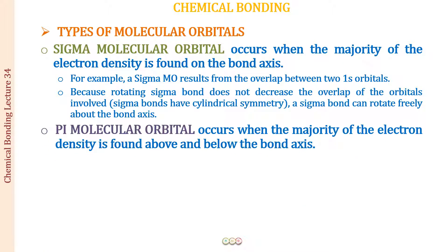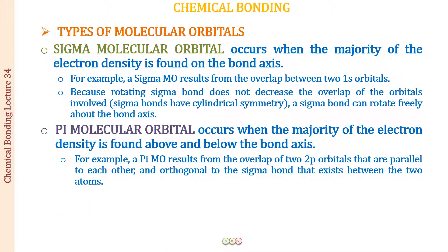The next we have is the pi molecular orbital. We learned that when the overlap between atomic orbitals is a sideways overlap — not on the internuclear axis — this results in an electron cloud above and below the internuclear axis. Similarly, the pi molecular orbital results when there is a sideways overlap of atomic orbitals, giving an increased electron density above and below the bond axis. For example, a pi molecular orbital results from the overlap of two 2p orbitals that are parallel to each other and orthogonal to the sigma bond between the two atoms.